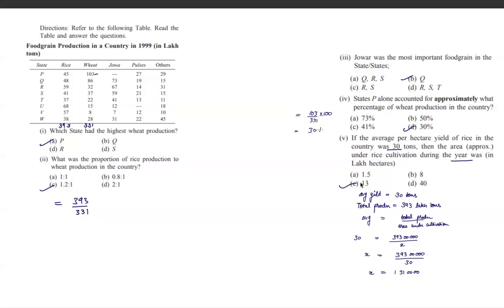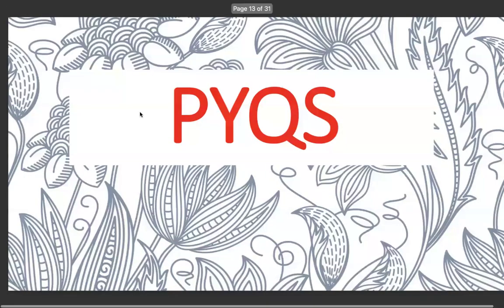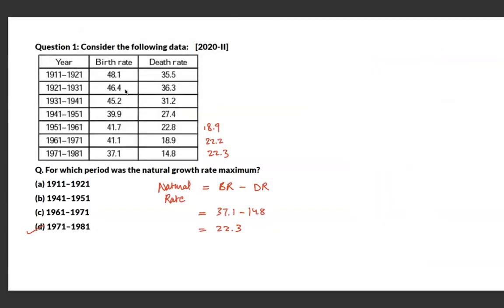The next dataset shows birth rate, death rate, and decadal time periods. The question asks for which period the natural growth rate was maximum. Natural growth rate equals birth rate minus death rate. Scanning the figures, the last three periods show larger gaps. Calculating those specifically, 1971–81 gives 22.3, which is the maximum — so that decade is the answer.